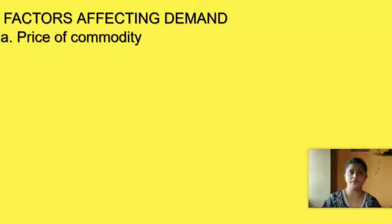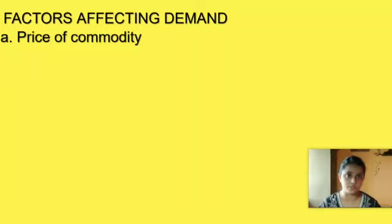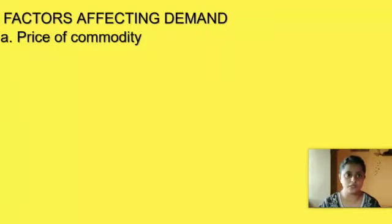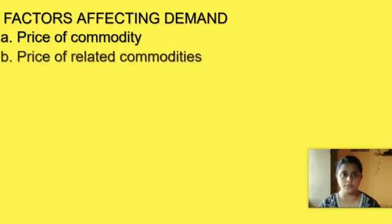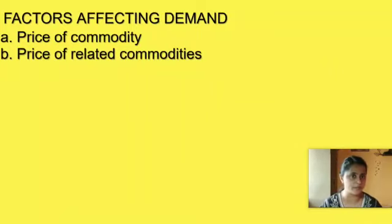Generally there is a negative relationship between demand for a commodity and its price. Demand for a commodity increases with a decrease in its price, and in the same way, demand decreases with an increase in its price, other things remaining the same.